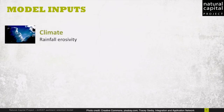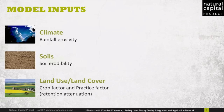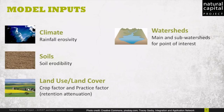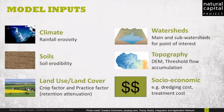Moving on to the inputs: to run the model, users will need information about climate and soil — the erosivity and erodibility factors we've seen before — the land-use land cover and its spatial distribution, the watersheds (areas that drain to a single point in the landscape), the topography via the digital elevation model (DEM), and socioeconomic data to inform the valuation step.